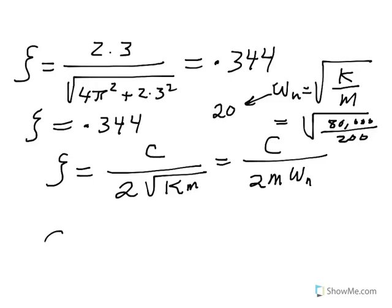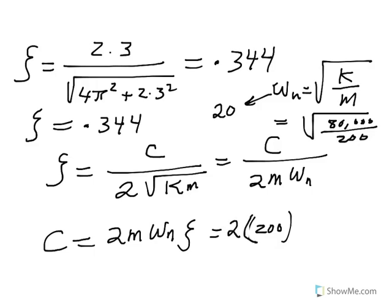So now look, by just cross multiplication, C becomes 2m omega n times zeta. So mass is 200 kilograms. And so 2 times 200 kilograms times 20 radians per second times the zeta, which we ended up getting 0.344. And that gives us roughly a C, we have done some rounding off here, about 2,750 newton seconds per meter.